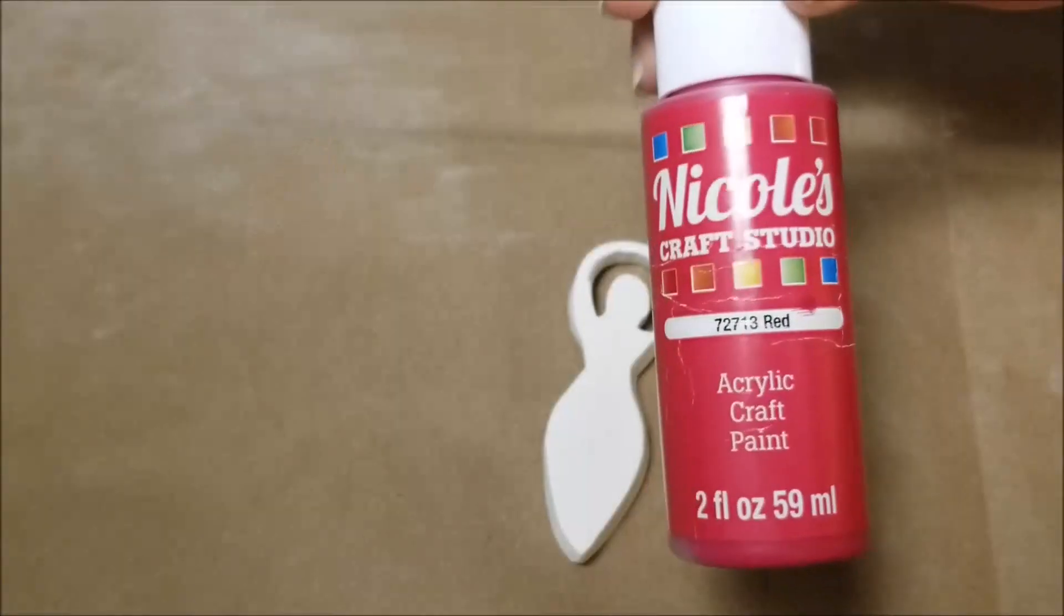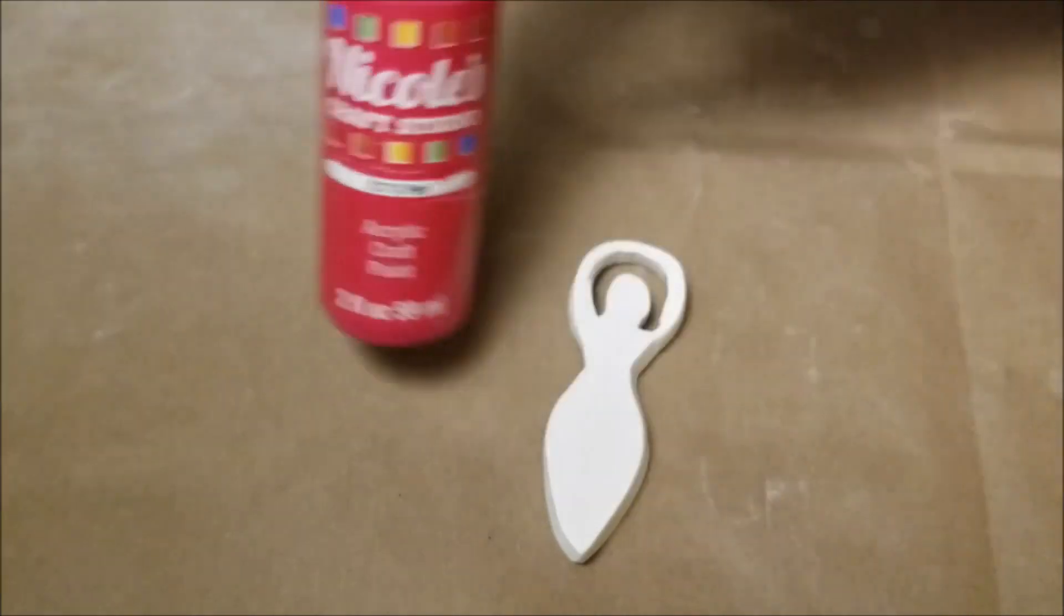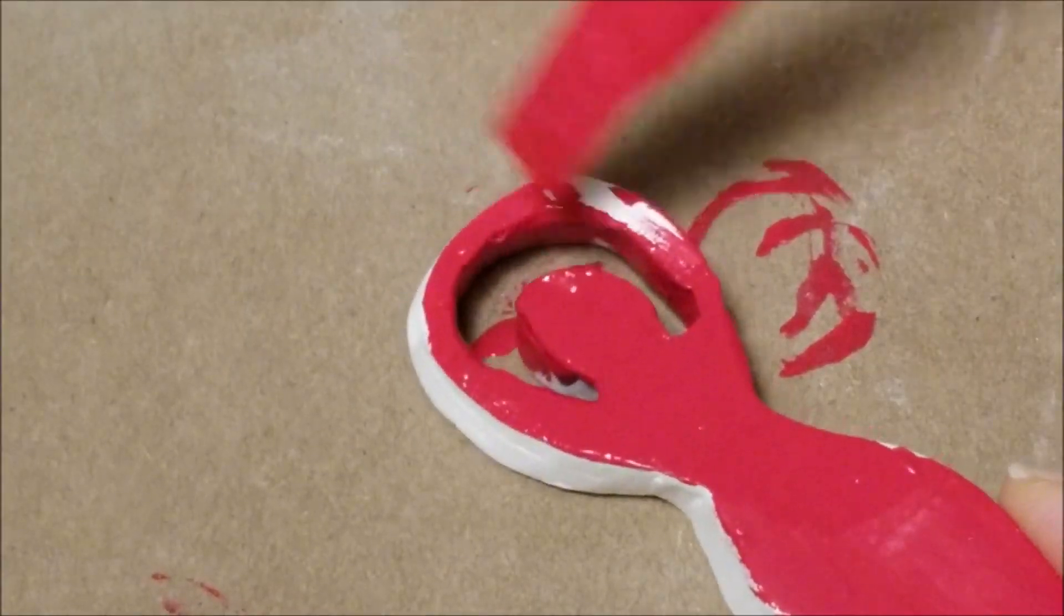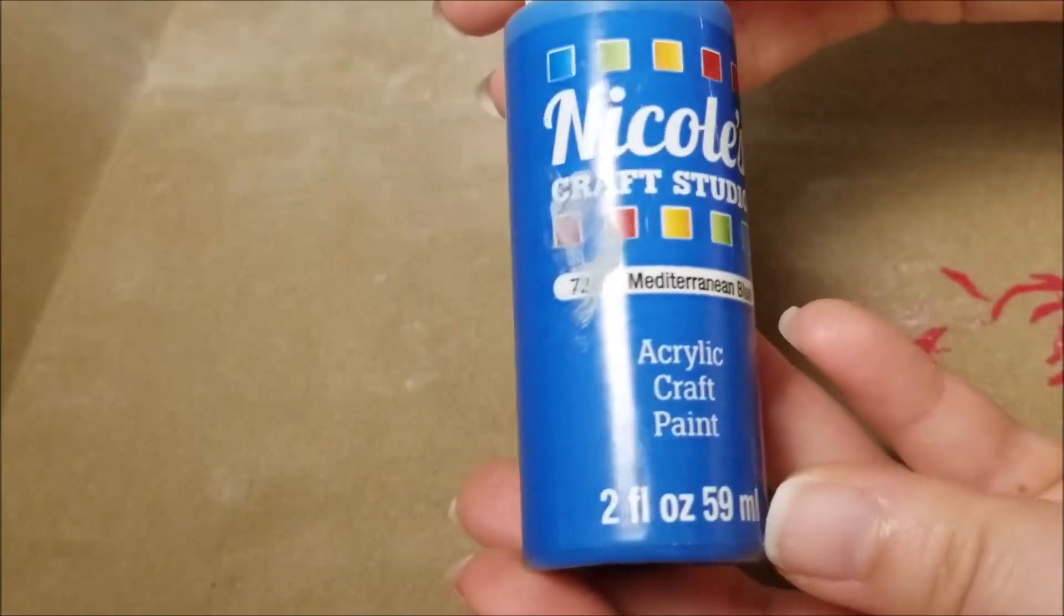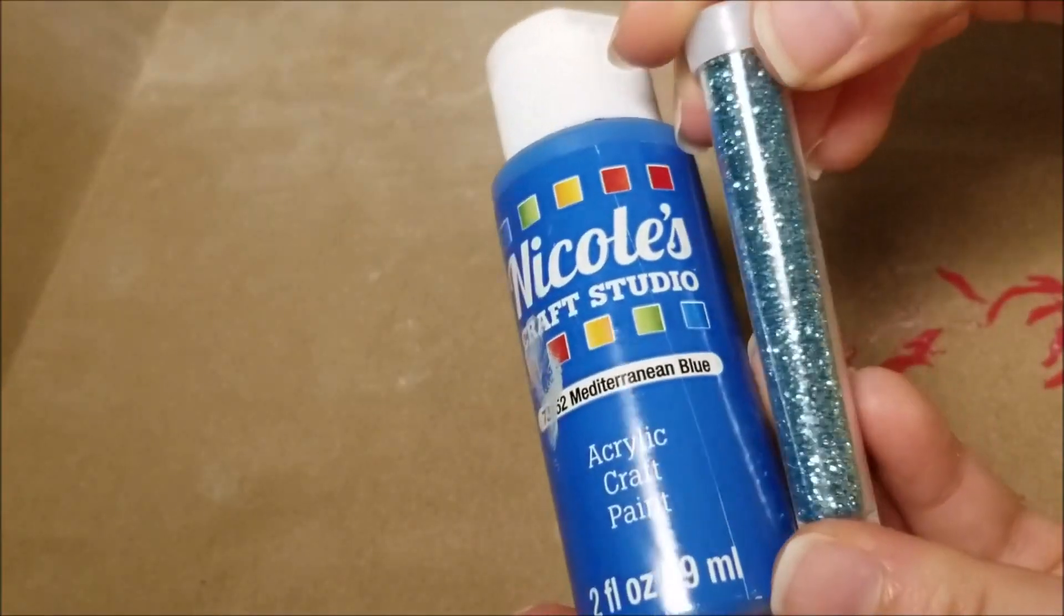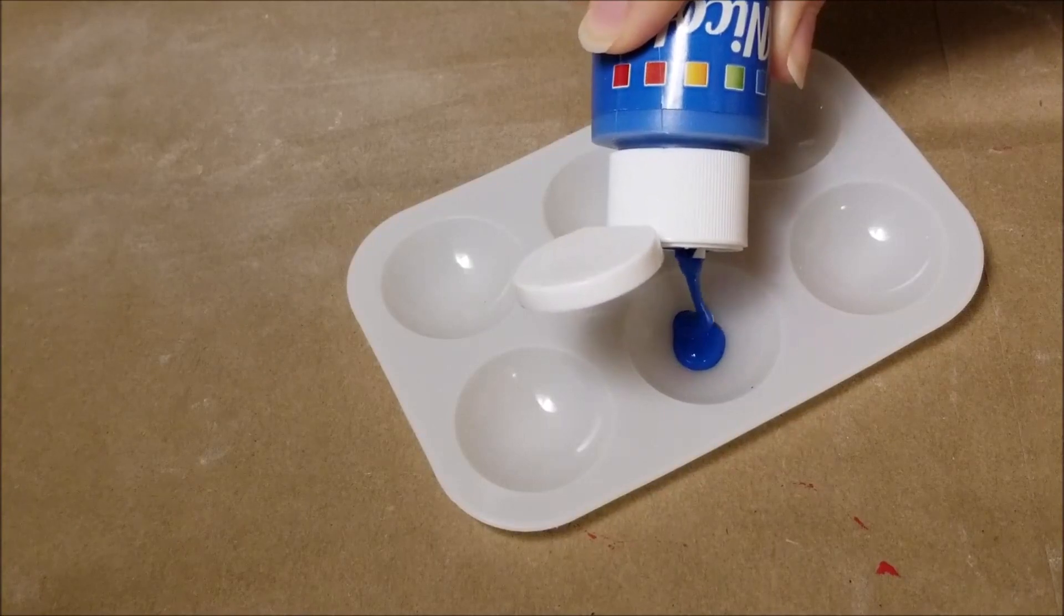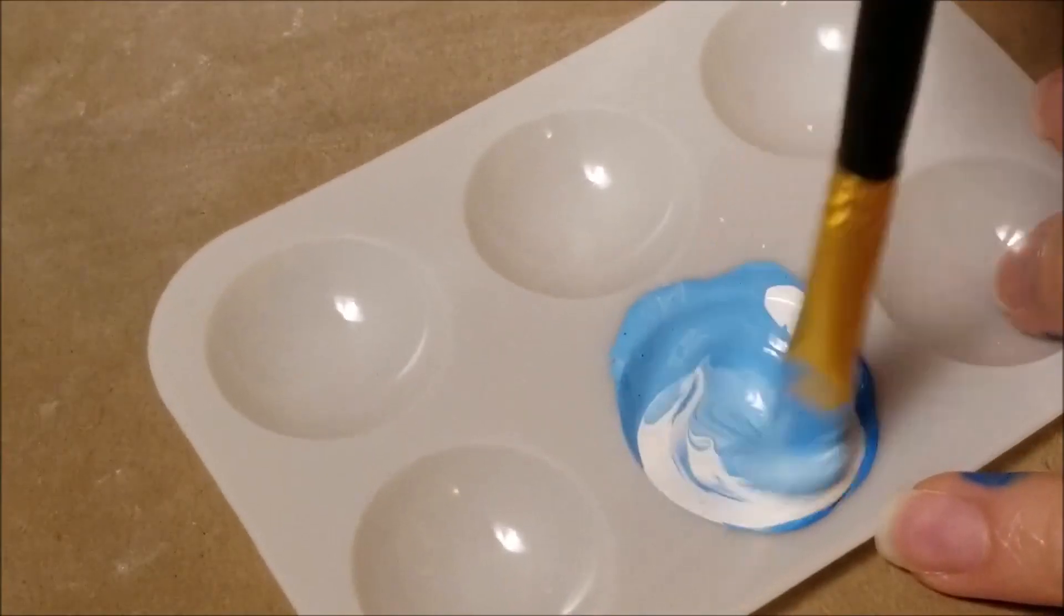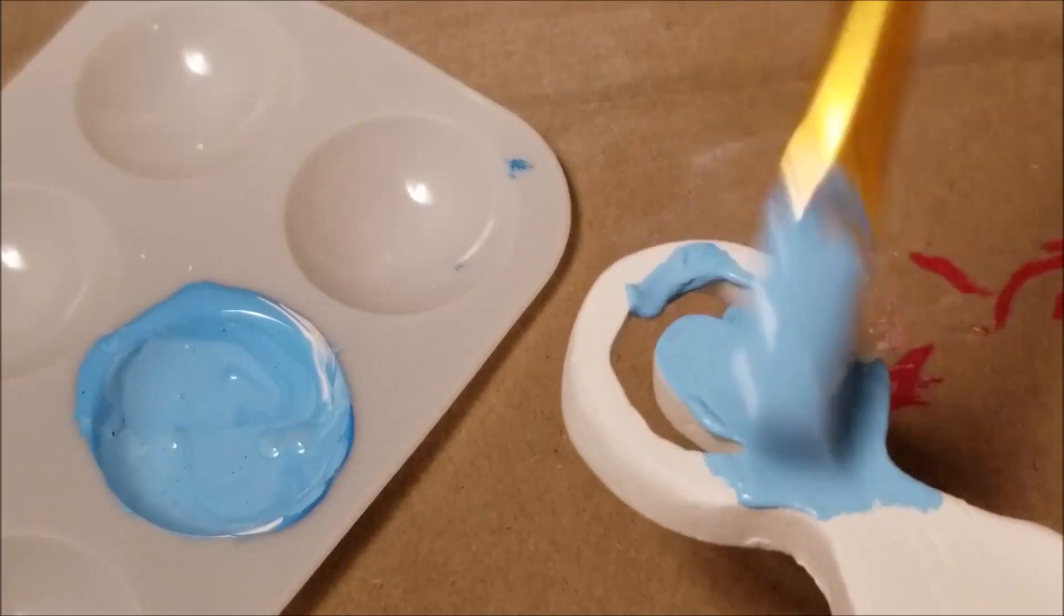I'm making sure that the base color matches the glitter I'm using so that if I miss any spots when I add my glitter, it won't be as noticeable. Now this blue paint I'm using is just a little too dark for the blue glitter I'm using so I'm adding some white paint to it to lighten it up. I continued to paint the rest of the goddesses.